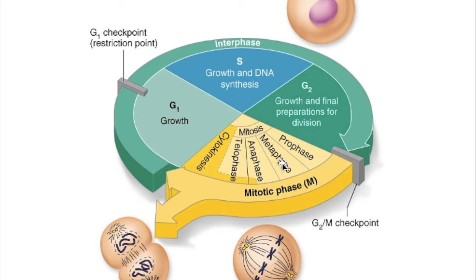Cytokinesis is the process of dividing the cytoplasm into two separate cells. In a typical picture of mitosis, metaphase is when the chromosomes are lined up in the center, and cytokinesis is when the cells actually divide.